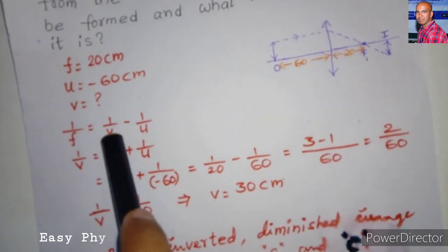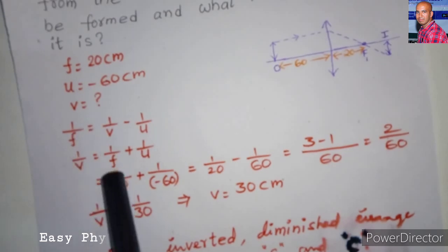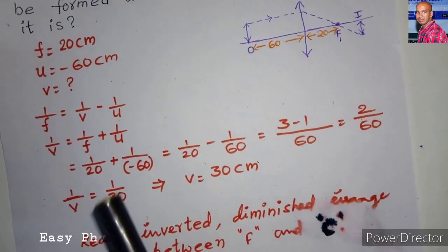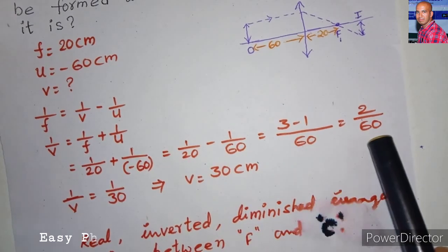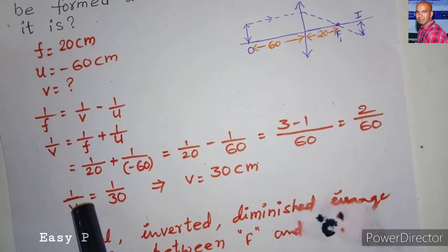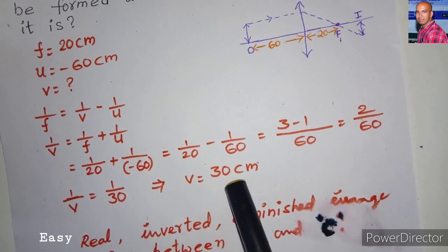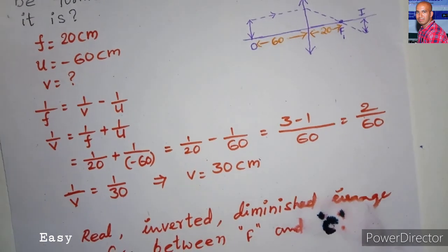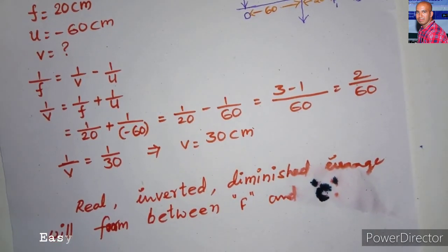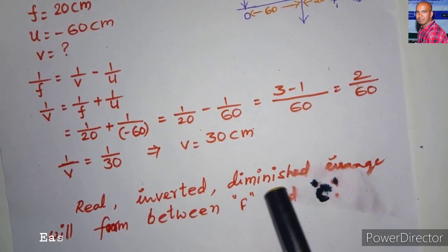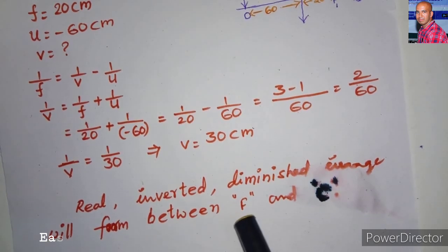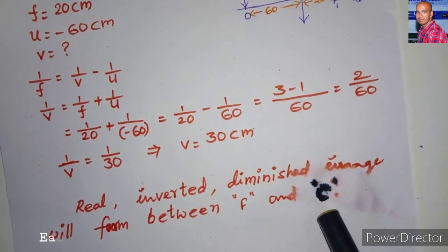Substituting and simplifying, we get 1/v = 1/30, so v = 30 cm. From this, the image is real, inverted, and diminished, forming between the focus and the center of curvature.